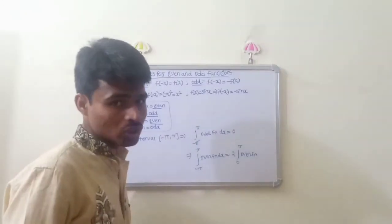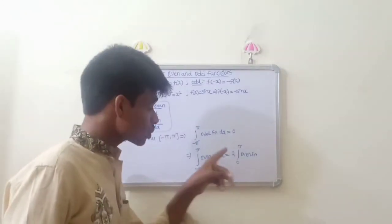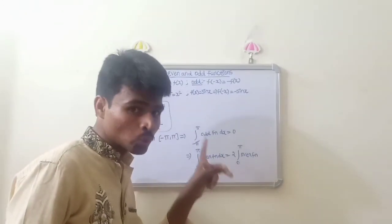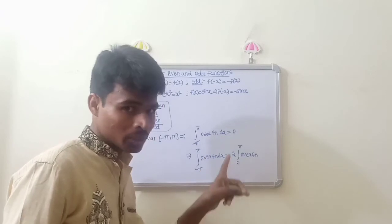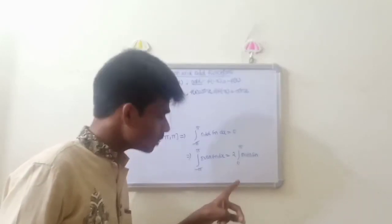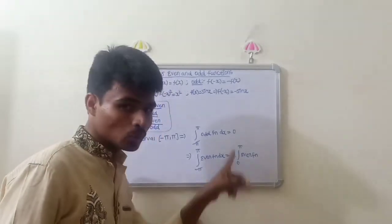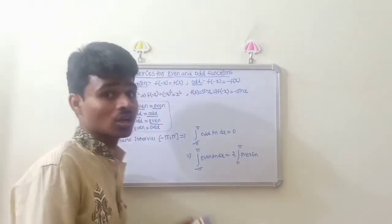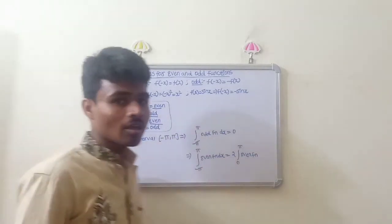For an odd function, the integral over a symmetric interval is 0. For an even function, it is 2 times the integration from 0 to L of the even function. This function formula is very important.